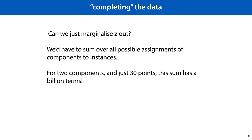One approach you might think of, given that we're faced with two random variables, the data X and the values of the hidden variable Z, and we want a probability distribution over just one of them, we can maybe marginalize out the Z. The problem there is that we would have to sum over all possible assignments of components to instances. And for just two components and just 30 points, this sum already has a billion terms.